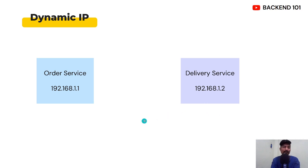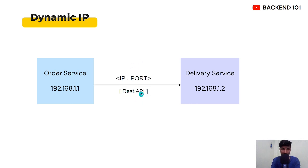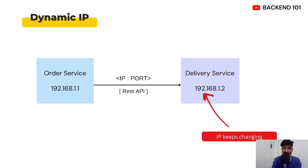The first problem is the problem of dynamic IP. Let us consider there are two services — one is order service and another is delivery service. Both services have their own IP address. Order service wants to communicate with delivery service using REST API, for which it would need the IP address and port of delivery service. But the problem is that these services run in a containerized environment like Docker, where the IP addresses keep changing.